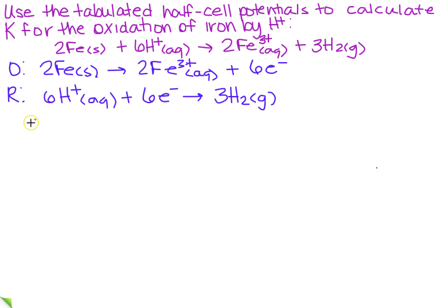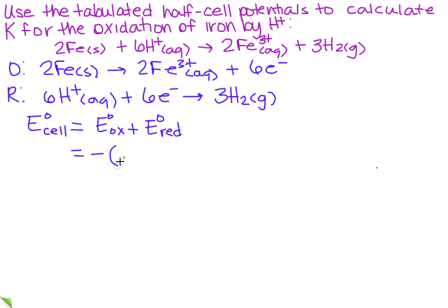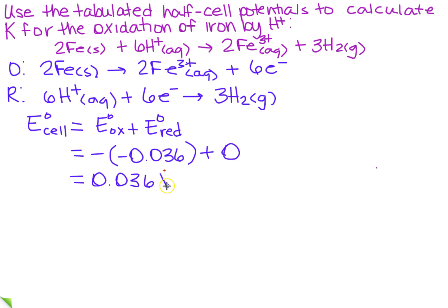That allows me now to look at the table in my book on the standard electrode potentials. So I can find the E of the cell is equal to E of the oxidation plus E of the reduction. Remember, the oxidation is the opposite of the reduction. So when I look up iron, I get negative 0.036. I don't need to look up the hydrogen — I know it's 0. So this will just give me 0.036 volts.